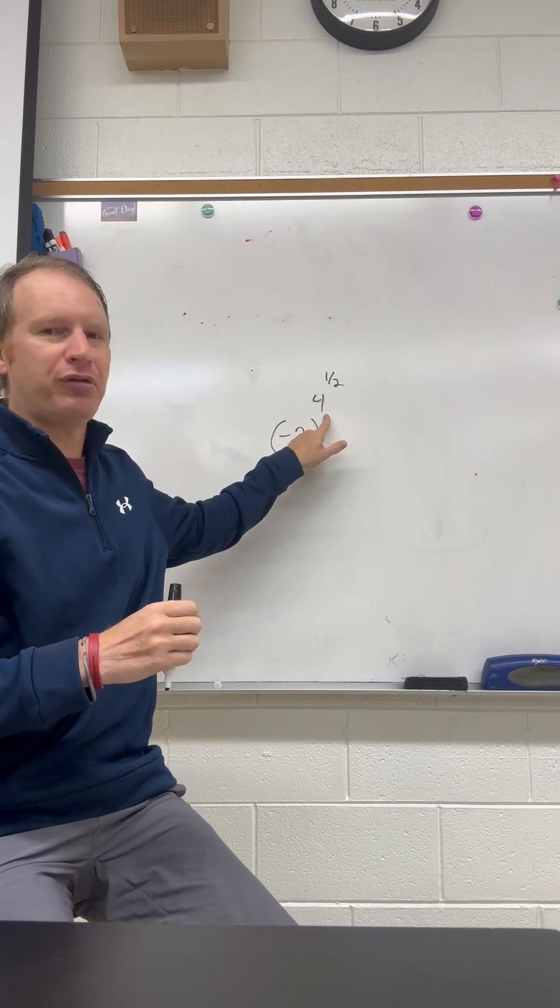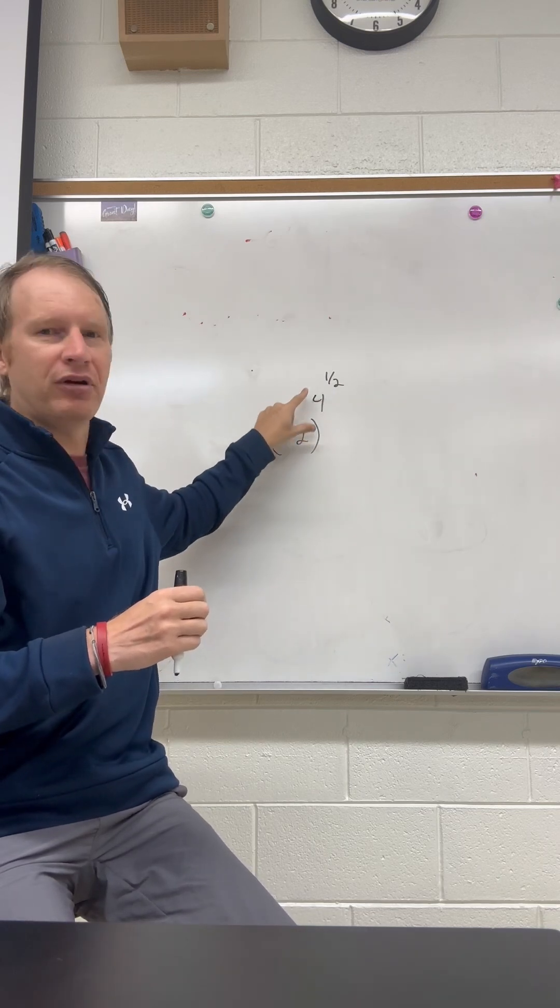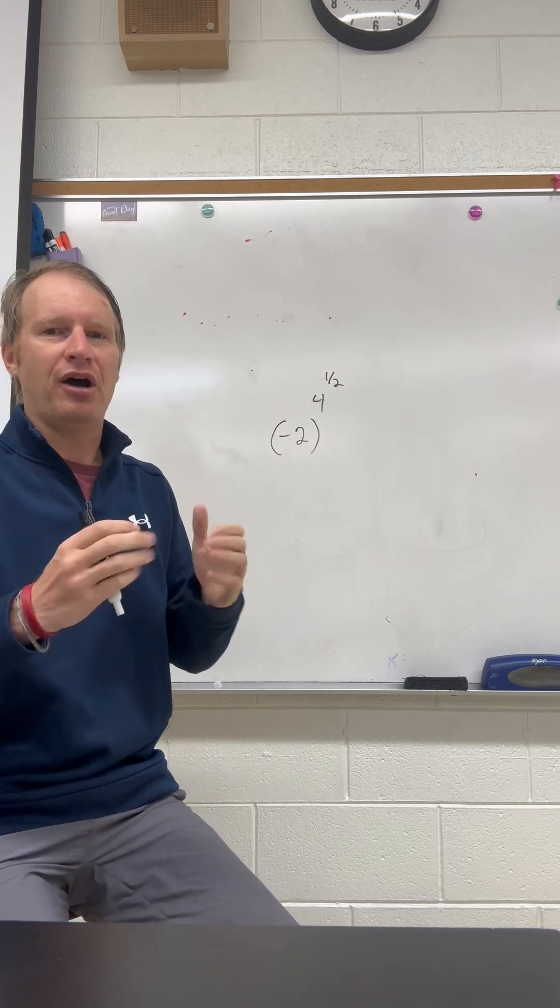We've got negative 2 being taken to the 4th power, being taken to the 1/2 power. So we have a power, and then we have another power. We have two exponents. How do we do that?